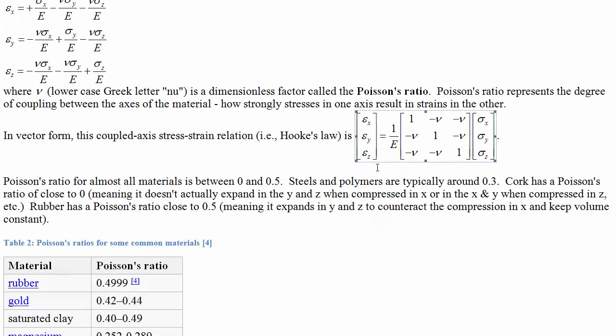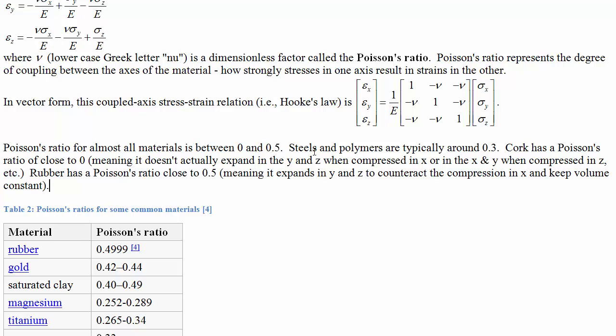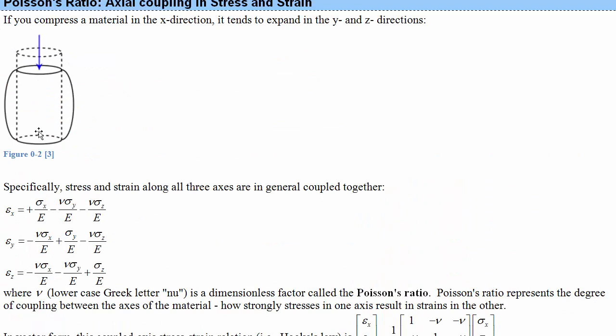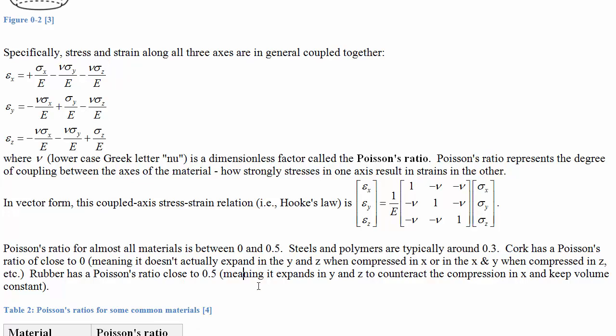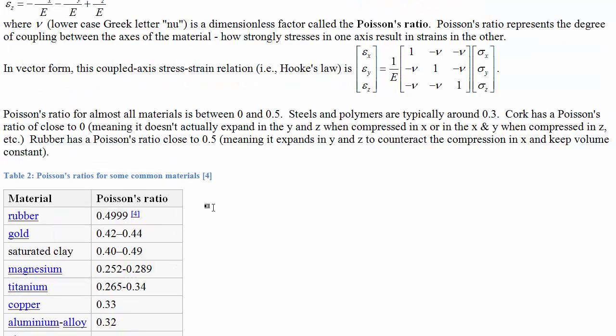Poisson's ratio for almost all materials is between 0 and 0.5. Steels and polymers are typically around 0.3. Cork has a Poisson ratio of 0 at one end of the spectrum, while rubber has a Poisson ratio of 0.5 at the other. A Poisson ratio of 0 means compressing or extending it produces no change in the other dimensions — the axes are uncoupled — whereas rubber has the maximum coupling. Rubber manages to retain volume when you compress or extend it.